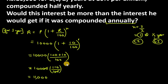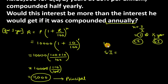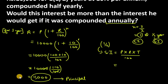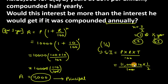Now we want to find the amount for the remaining half year. Remember, 11,000 now becomes the new principal for the simple interest formula. Simple interest = P × R × T / 100. Principal is 11,000, rate is 10%, time is 1/2. Cancelling zeros and simplifying, this gives 550. So simple interest for half a year is 550.